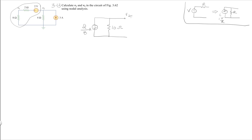Now we have our node V2, and we still have our 4 ohm resistance and a 3 amp current source, and that is our ground. Now I can write the KCL equation for node 2. The currents coming in are these — this is the only current coming in.